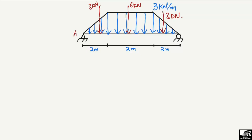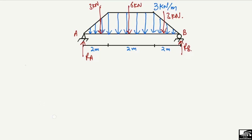Support A is on the left and support B is on the right, with reactions RA and RB. Taking the summation of moments at point A equal to zero — with clockwise moments taken as positive and counter-clockwise as negative — the first load creating a moment about A is the 3 kN force. Moment equals force times moment arm.